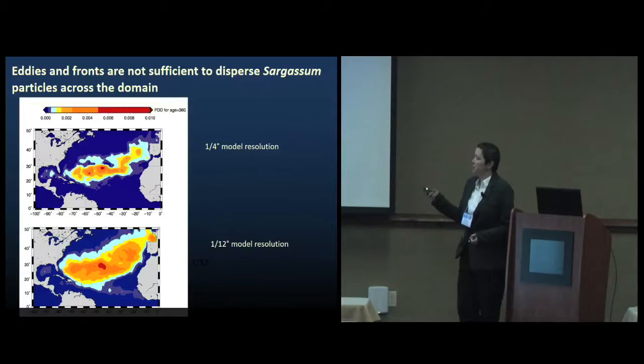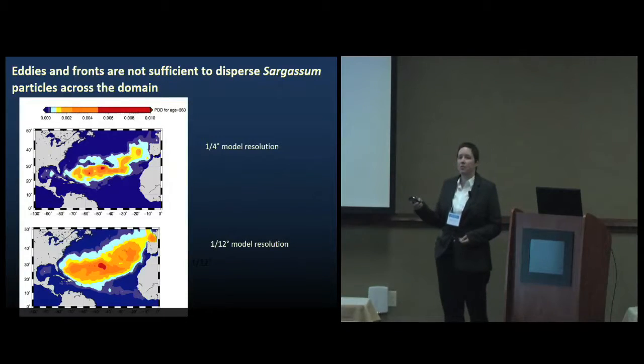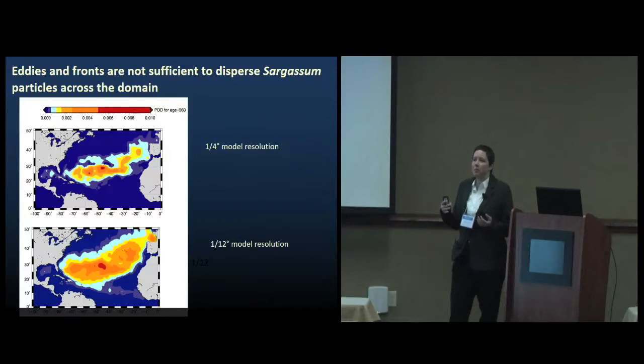When I move to the higher 1/12th degree resolution that I'm running out in Blue Waters, I'm hoping to capture more of the eddy activity. It's reasonable to think that mesoscale features like eddies and fronts might help disperse the sargassum out of the gyre. But what I found is that even though the particles end up more dispersed than they are in a coarse resolution model, it's still not really enough to generate that annual sargassum distribution. They're still really just collecting in the gyre.